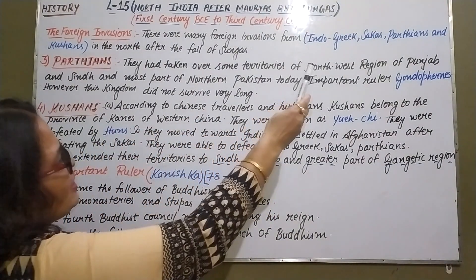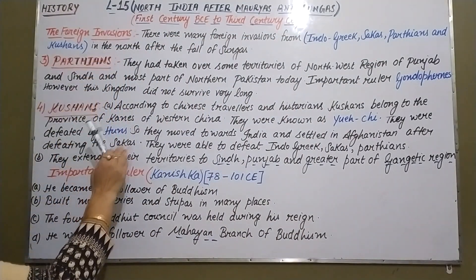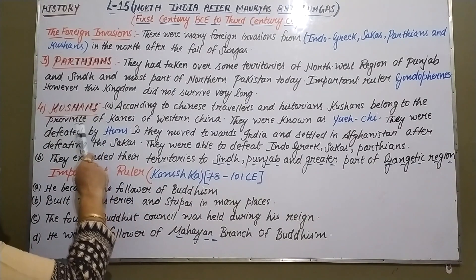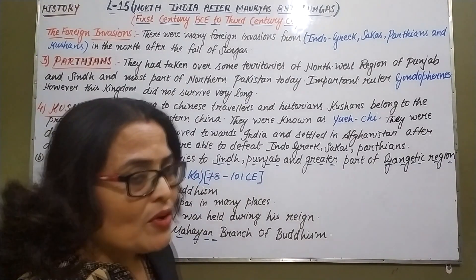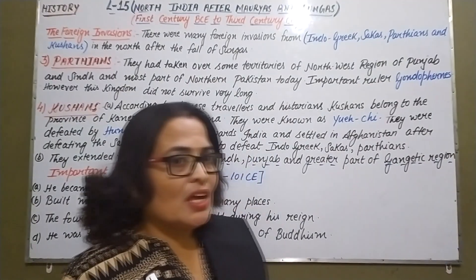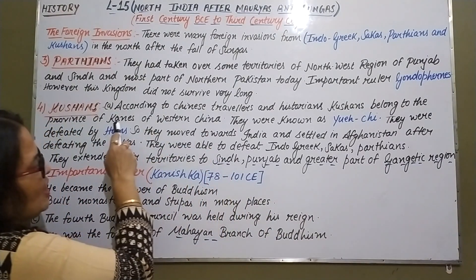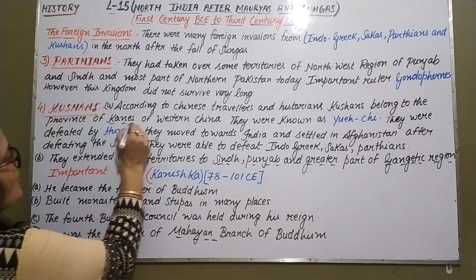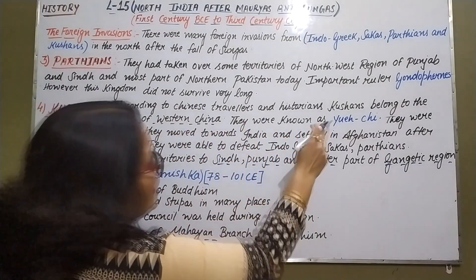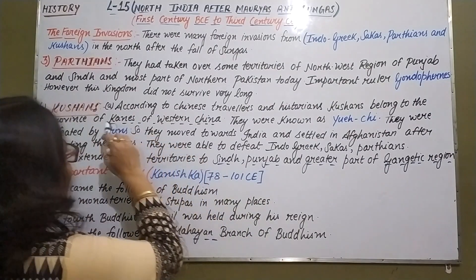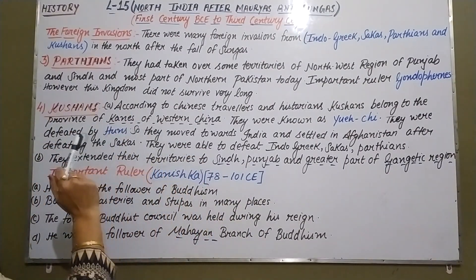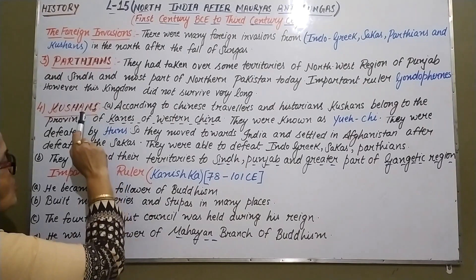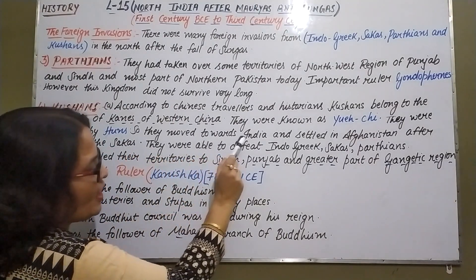After the Parthians came the Kushans. According to Chinese travelers and historians, the Kushans came from the province of Kanes in western China. They were also known as the Yuezhi. The Kushans were later defeated by the Huns.